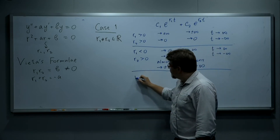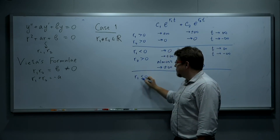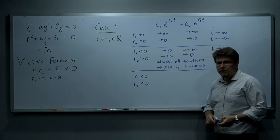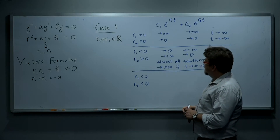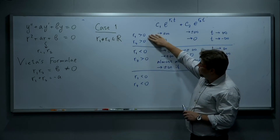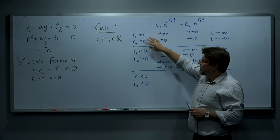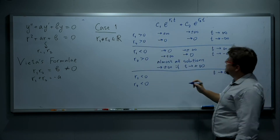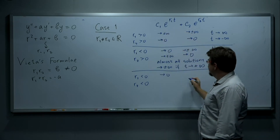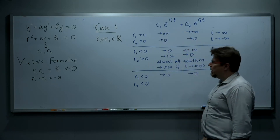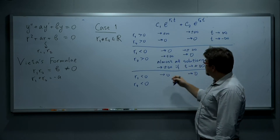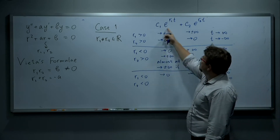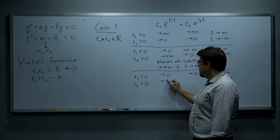The last subcase is when both roots are negative. This is basically the opposite of the first subcase: if both roots are negative, then as t goes to positive infinity, both terms approach zero, so all solutions approach zero. And if t goes to negative infinity, both terms approach plus or minus infinity.